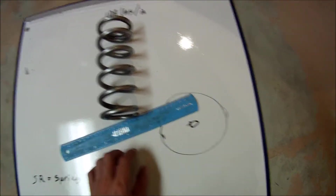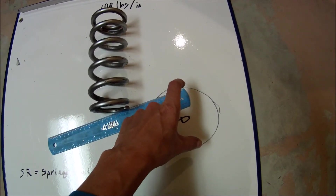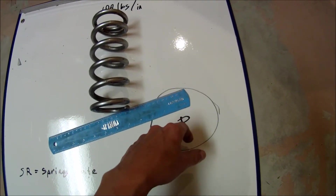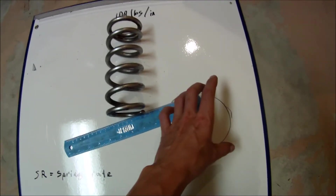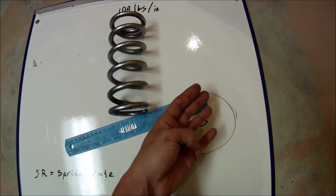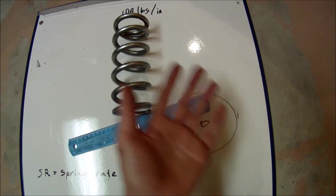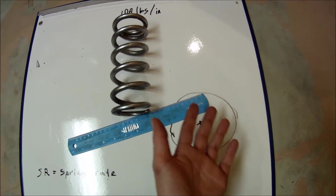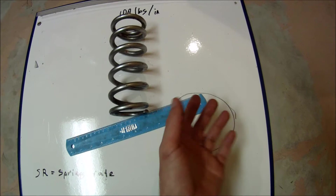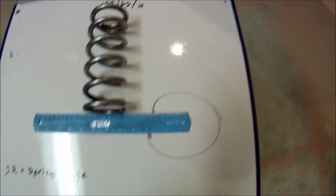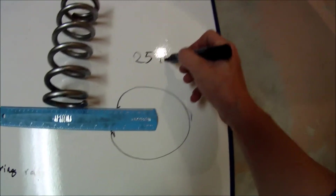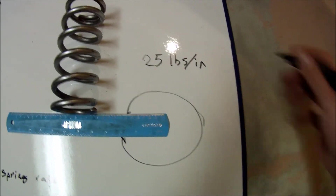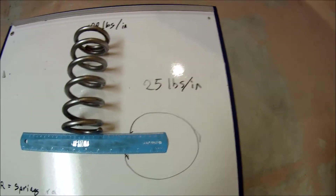When we apply 100 pounds of force at the wheel, it applies 200 pounds on the spring, compressing it two inches, which means the wheel is going to move four inches. Since the wheel moves four inches, we take 100 pounds divided by four — because wheel rate is measured in pounds per inch — and we get 25 pounds per inch.